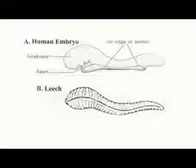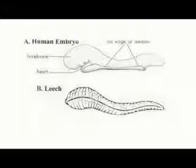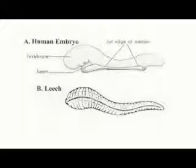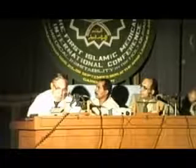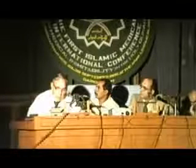I think you have to agree that the similarity between these structures is amazing, and that the human embryo is truly leech-like. The leech-like embryo is attached to the chorionic sac, which is embedded in the maternal blood and attached to the maternal endometrium, or the lining of the uterus.